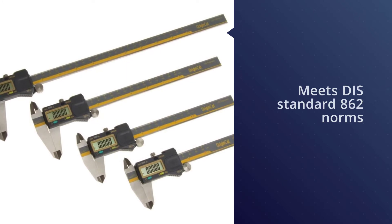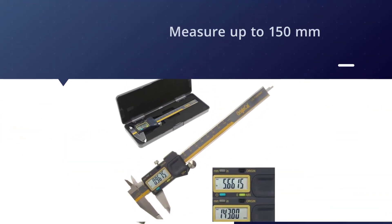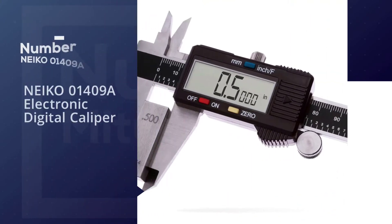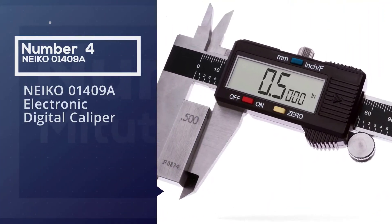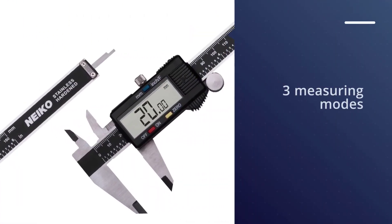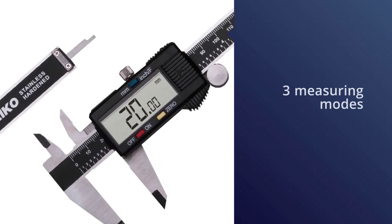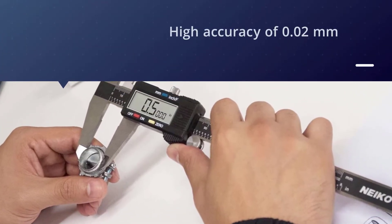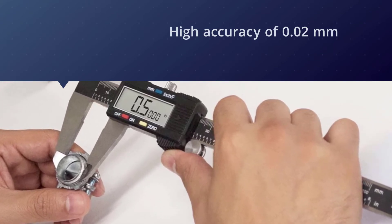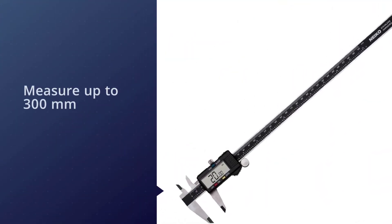Number four: Neiko 01409A electronic digital caliper. This caliper provides you with three measuring modes: inches, fraction, and the universal standard millimeters. It has a high range of 0 to 300 millimeters in length and is capable of providing highly accurate results up to 0.02mm. It is built from stainless steel with a knurled thumb on the dial for easy movement.